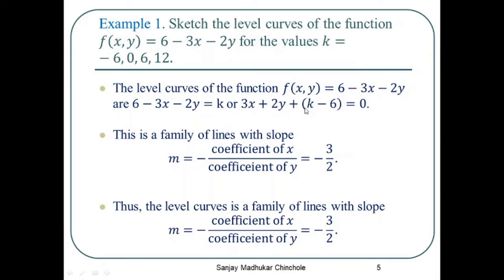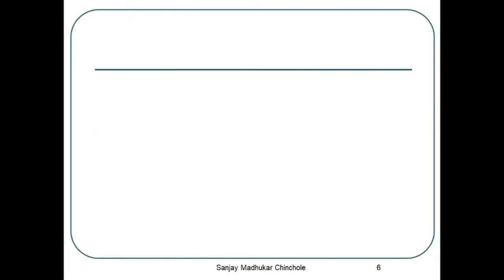For k = −6, we get the line 3x + 2y − 12 = 0, or 3x + 2y = 12. For k = 0, it becomes 3x + 2y − 6 = 0, or 3x + 2y = 6. For k = 6, it becomes 3x + 2y = 0. For k = 12, it becomes 3x + 2y + 6 = 0.